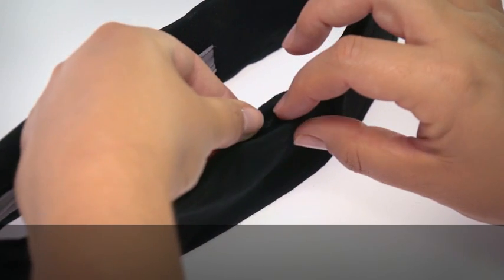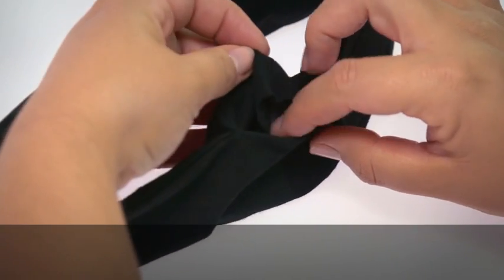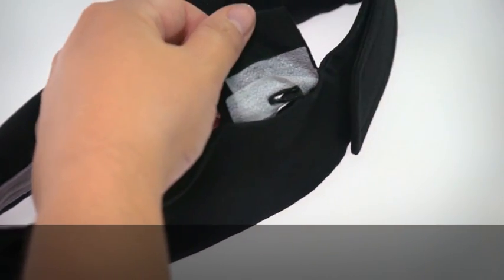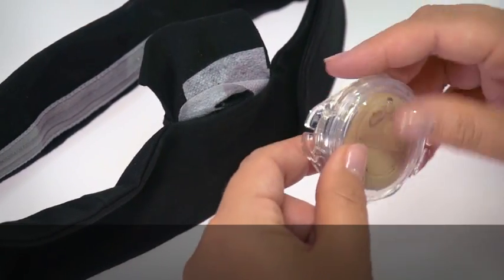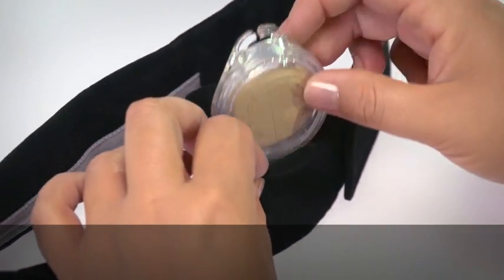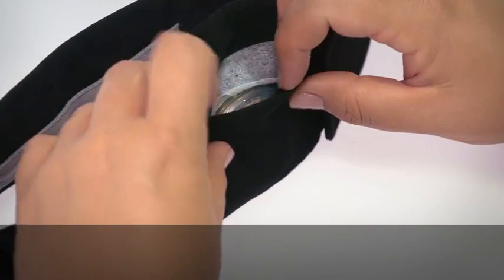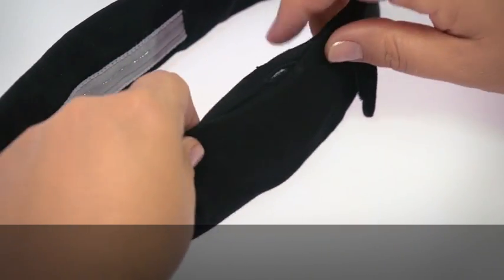Open the outer pocket and lift the inner pocket. Position the Kanso in such a way that the magnet is facing towards the inside of the headband. Secure your Kanso within the inner pocket and close the outer pocket.